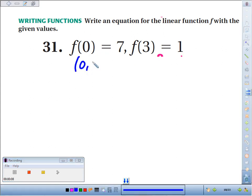They say when you plug 0 into the function, you get 7 out. When you plug 3 into the function, you get 1 out. It's like x, y values.